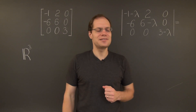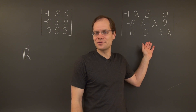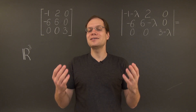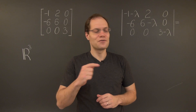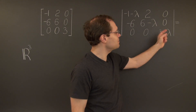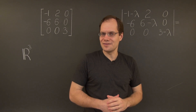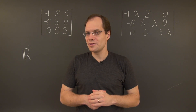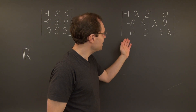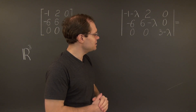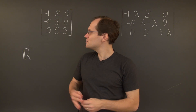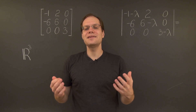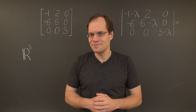So let's proceed with the standard eigenvalue algorithm and see what happens. The first step is to subtract lambda from the diagonal. And the next step is to obtain the characteristic polynomial by evaluating the determinant of this matrix. I specifically chose a matrix with a lot of zeros to make the next step as simple as possible.